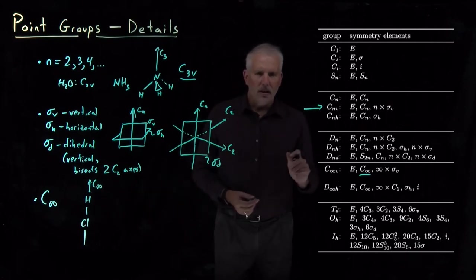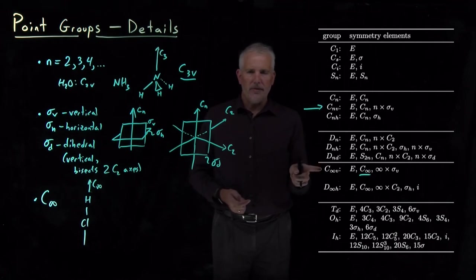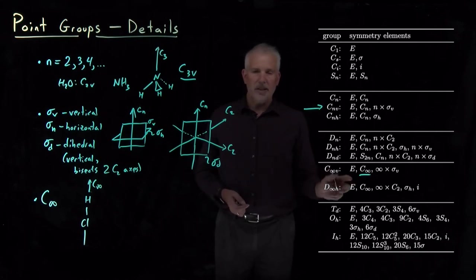The only difference between these C infinity V and D infinity H point groups then, they both have this C infinity axis.